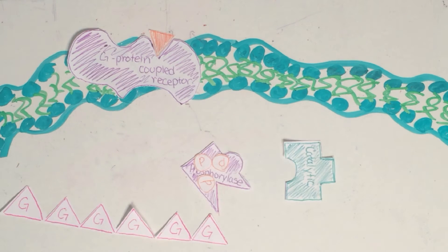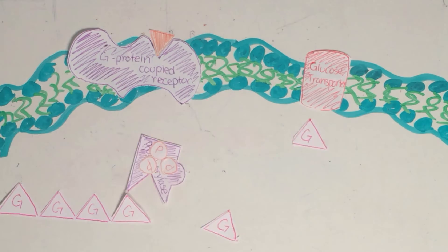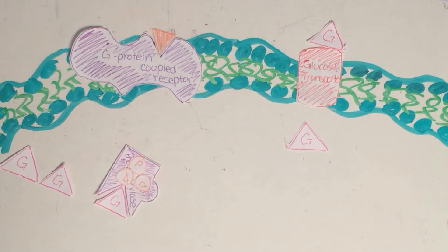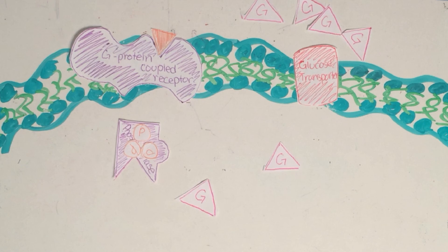This marks the end of the signal transduction pathway. The final phase, response, is when the glucose travels out of the cell through glucose transporters straddling the membrane.